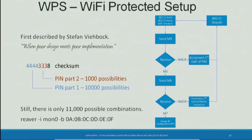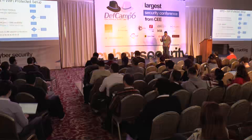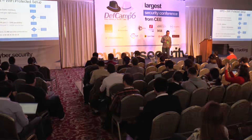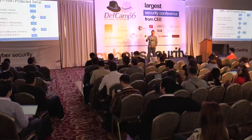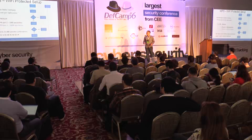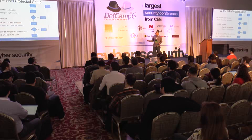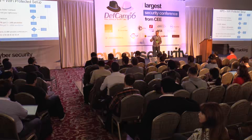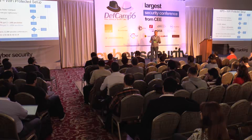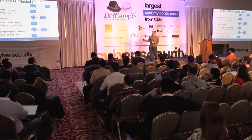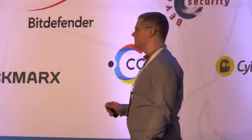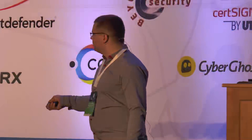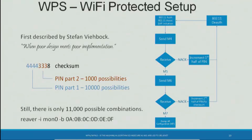WPS from the beginning: it is a system designed to help users who have little trouble handling passwords. Someone figured out that by making a PIN as a backup, the user would have an easier life. When you push a button and enter the PIN correctly on your laptop, the access point will send its passphrase in plain text. So all we need is the correct PIN, and this PIN will always be within those 11,000 possible combinations.